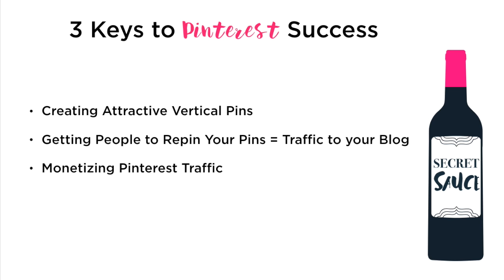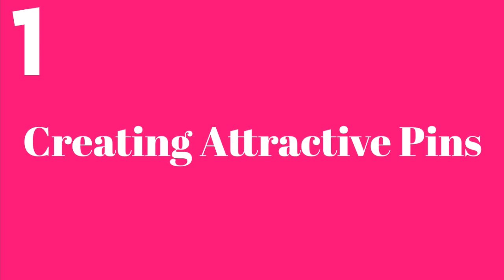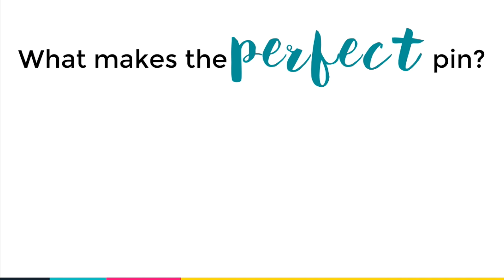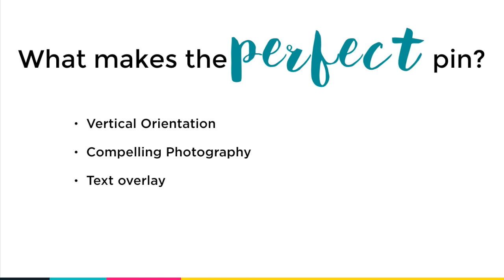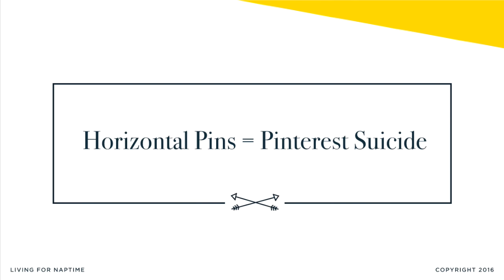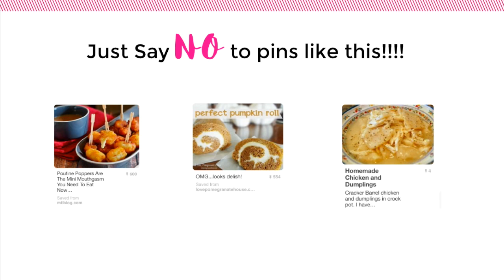Let's talk about creating attractive pins. What exactly makes the perfect pin? Make sure it is of a vertical orientation, use compelling photography, and use a text overlay to let potential readers know what your pin is about. If you are still using horizontal pins, it is Pinterest suicide — just say no. These pins just never get traction on Pinterest because they get lost in the feed. No one sees tiny horizontal pins compared to tall infographics and other compelling vertical photographs.